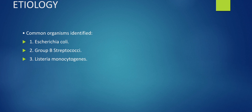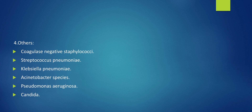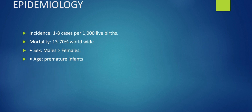The three most important organisms to remember are E. coli, Group B Streptococcus, and Listeria monocytogenes. Regarding epidemiology, the incidence of neonatal sepsis is 1 to 8 cases per 1,000 live births, with a mortality of 13 to 70% worldwide. It more commonly affects males than females and premature infants more than term infants.